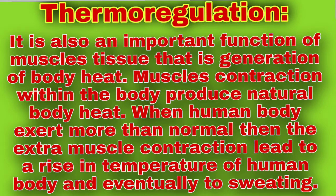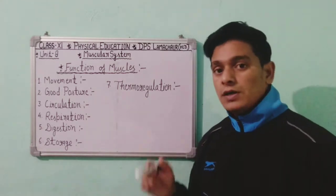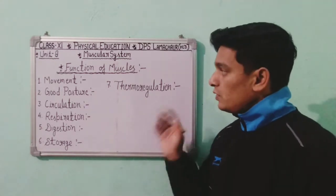The seventh and last function is thermoregulation — the generation of body heat. Muscle contractions within the body produce natural body heat. When the human body exerts more than normal, the extra muscle contraction leads to a rise in body temperature and eventually to sweating.